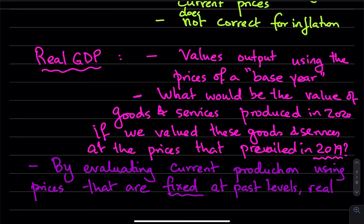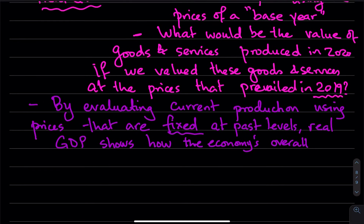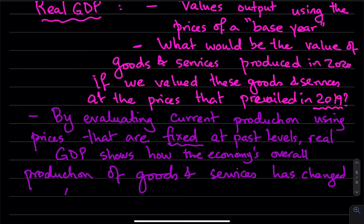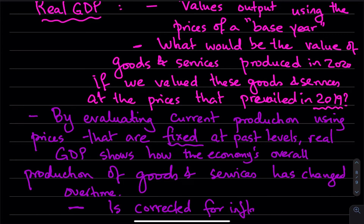Real GDP shows how the economy's overall production of goods and services has changed over time. In other words, real GDP does correct for inflation. These concepts covered in this video are going to be clarified using a simple example in the next video.